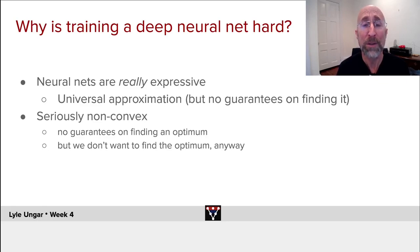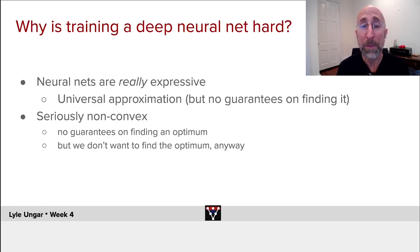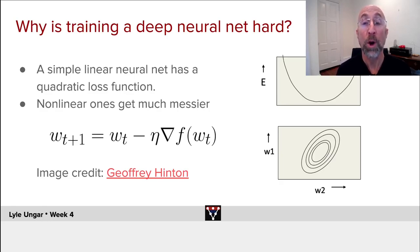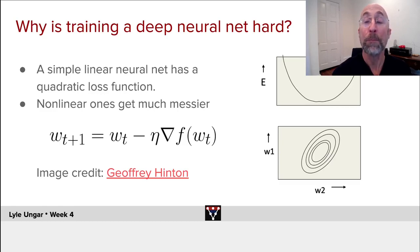These are things which are extremely non-convex, and anytime you try to optimize something that's incredibly non-convex it is really hard to optimize. The good news is we don't want to find the optimum anyway because it's probably overfit. The bad news is it's still tricky to get the optimization to work right. Even in the simplest network, if you consider a simple linear neural network with a quadratic loss function, the loss is a quadratic function of one of the weights.